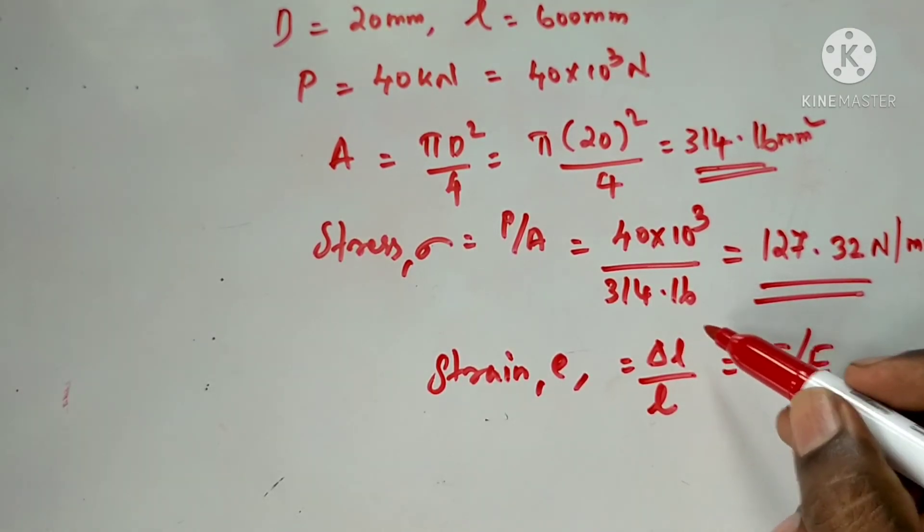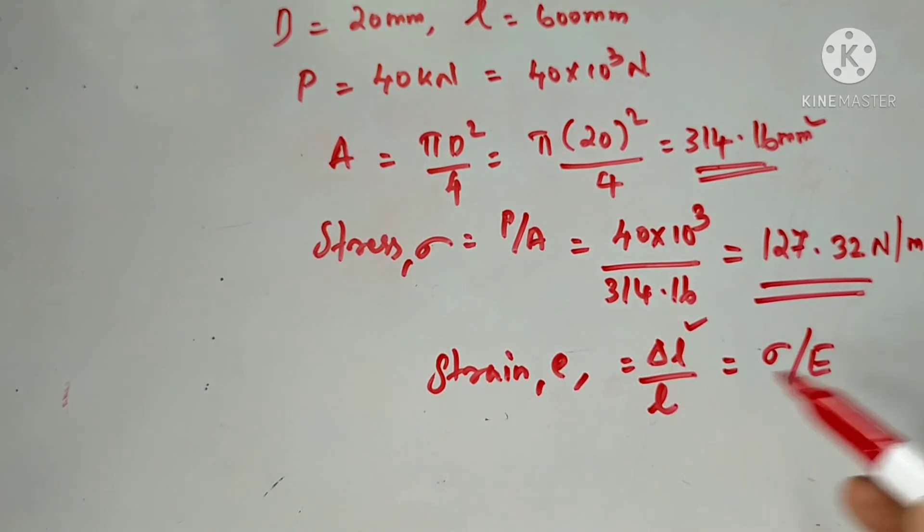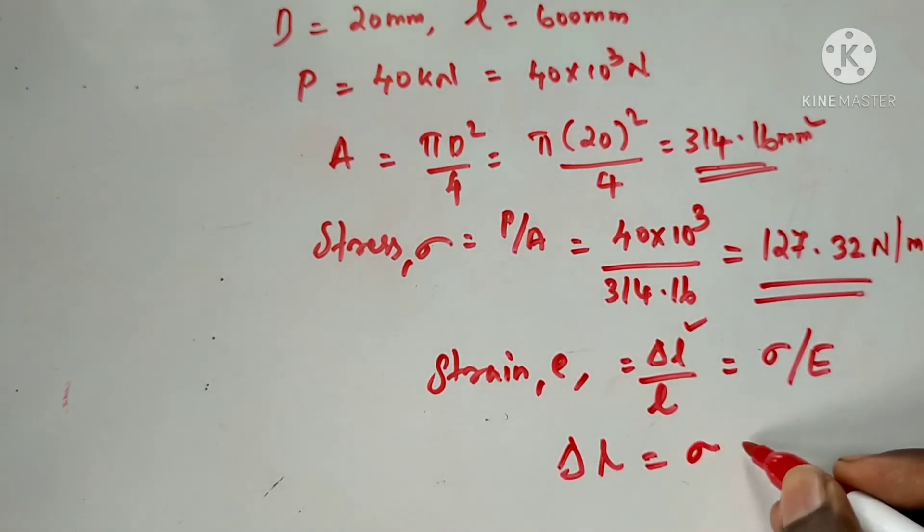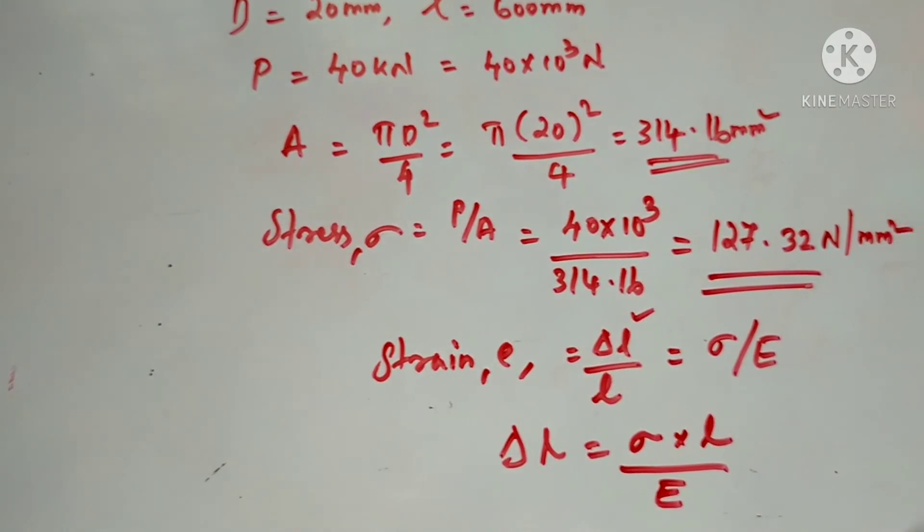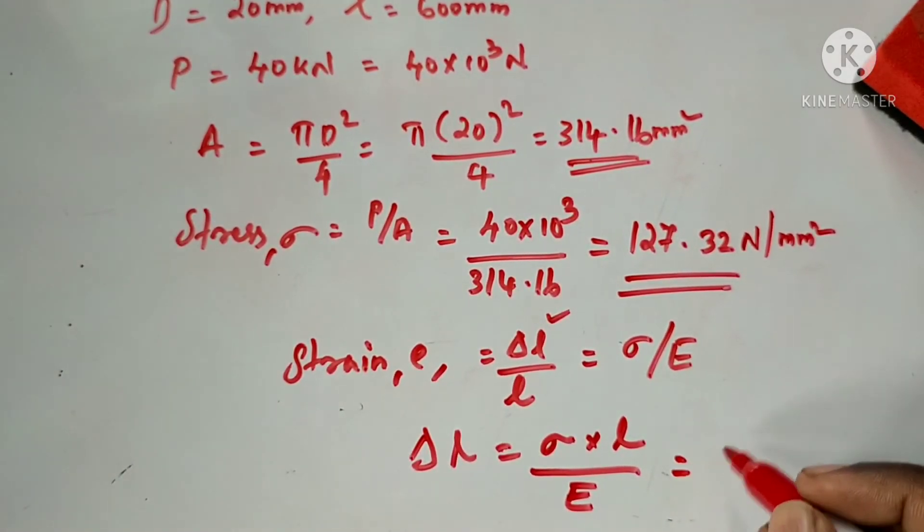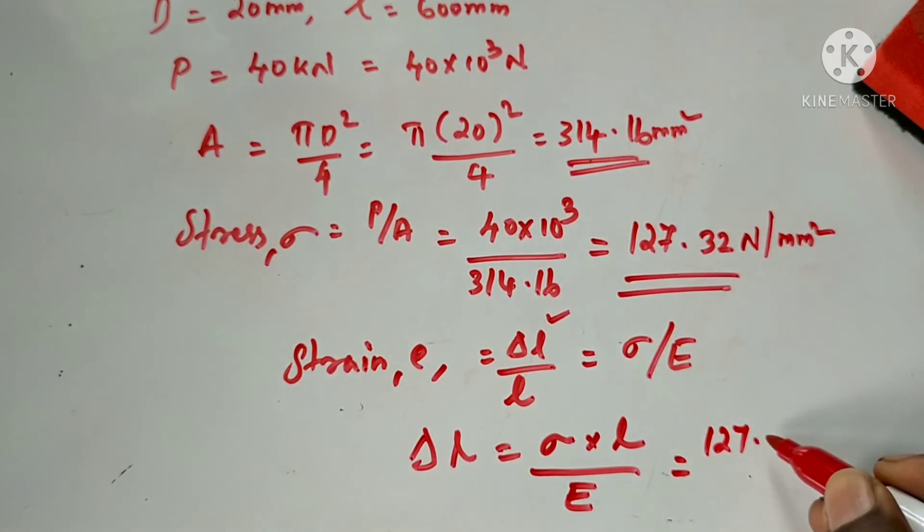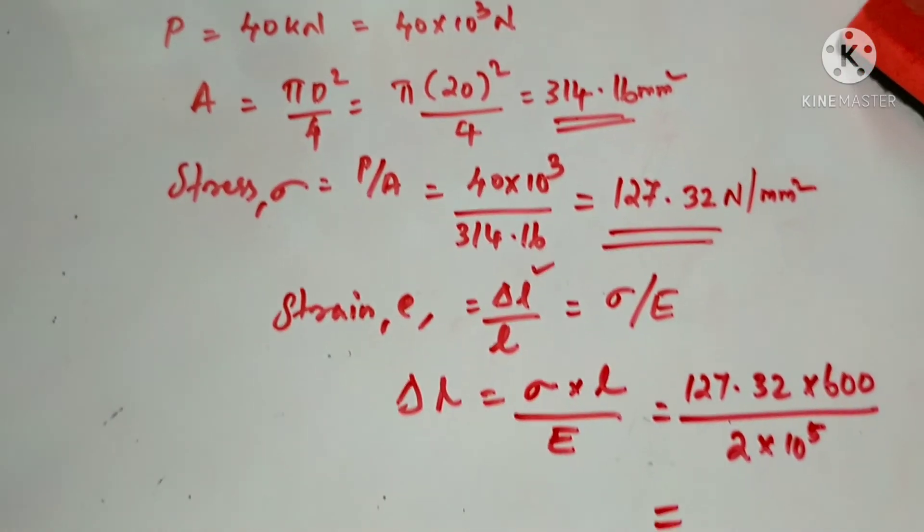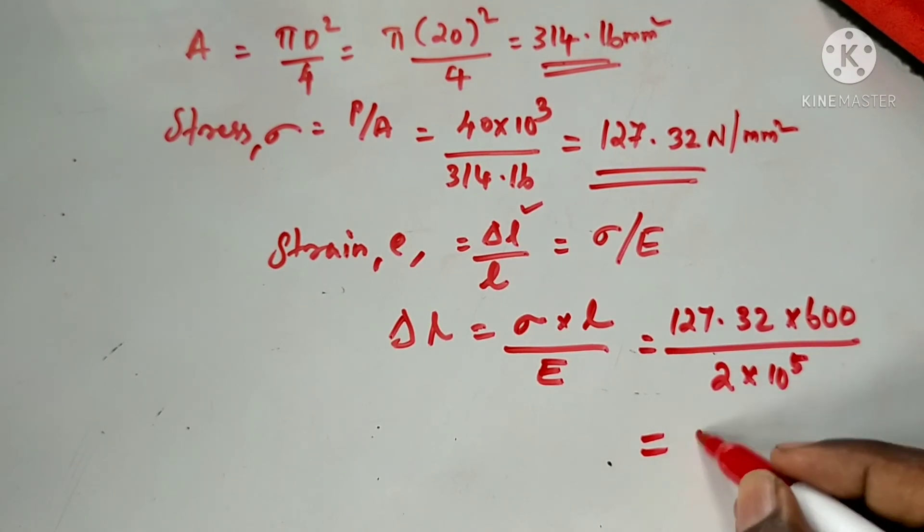At the original length, we substitute values into the equation. Delta equals σ × L divided by E. We substitute the values: 127.32 × 600 divided by 2 × 10⁵, which equals 0.382 mm.